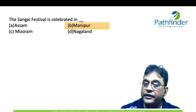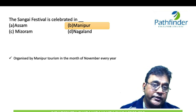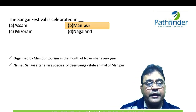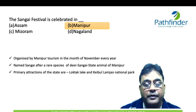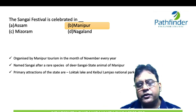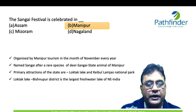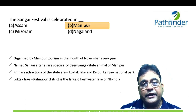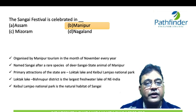Next question: The Sangai Festival is celebrated in the state of Manipur. Sangai is also the state animal of Manipur. Organized by Manipur Tourism in the month of November, it is named after the Sangai — a rare species of deer found in Manipur. The primary attractions of the Manipur state are the Loktak Lake in Bishnupur district — the largest freshwater lake in Northeast India — and the Keibul Lamjao National Park, which is the natural habitat of the Sangai.